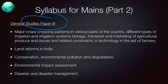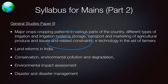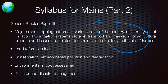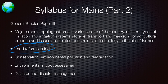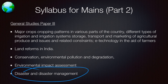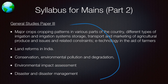General Studies Paper 3 covers major cropping patterns in various parts of the country, different types of irrigation systems, storage, transport and marketing of agricultural produce, related constraints, and e-technology in aid of farmers — all directly or indirectly related to geography. Land reforms in India can be taken under history or geography depending on context. Conservation, environmental pollution and degradation, environmental impact assessment, disaster and disaster management — all these require certain knowledge of geography to be understood.